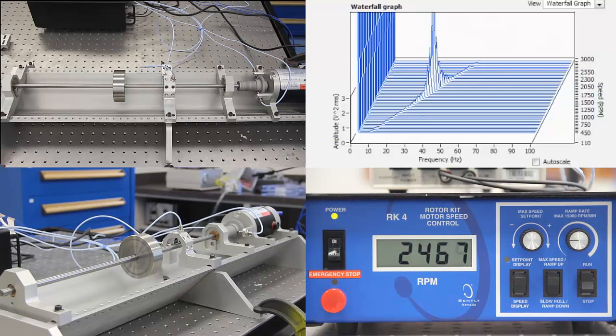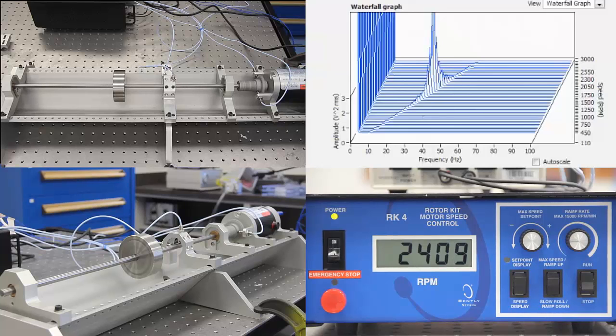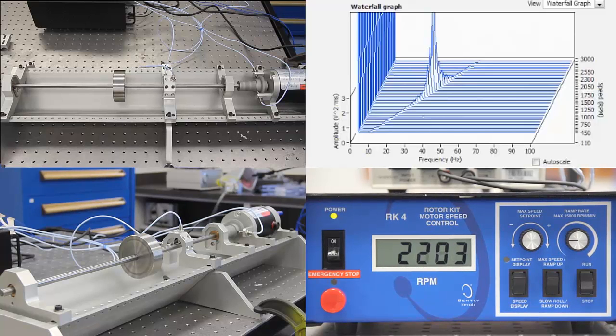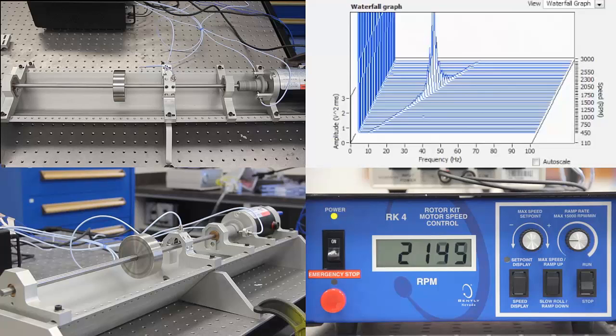During the slowdown of the motor speed, the natural frequency of the shaft will again interact with the excitation frequency of the motor speed, and it will again cross the critical speed around 1900 RPM. During this crossing large vibration can be observed and heard.